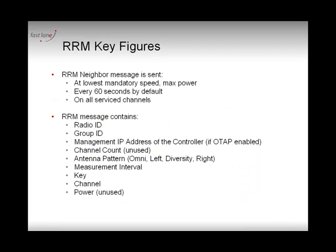Here are key things to remember. RRM neighbor messages are sent every 60 seconds on all serviced channels. If your access point is allowed to use channels 1 through 11, it sends a message on all 11 channels in a burst and then returns to its main channel. This message is sent at the lowest mandatory speed and at maximum power — power level 1, which is the maximum power allowed in your country — ensuring all access points within signal range receive and forward it to their controller.